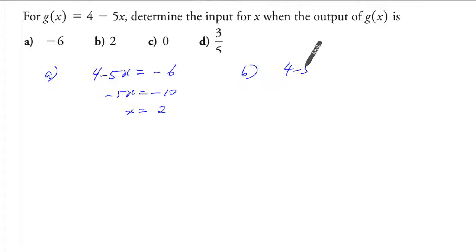For part b, similarly, just make that equal to 2. Negative 2, so x is 2 over 5.